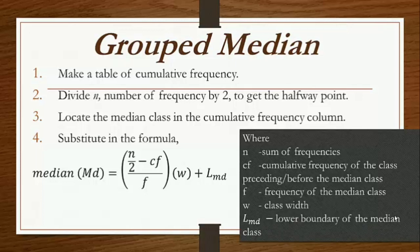In the formula, n stands for the sum of frequencies; CF is the cumulative frequency of the class preceding the median class; F stands for the frequency of the median class; W for the class width; and L sub MD is the lower boundary of the median class.